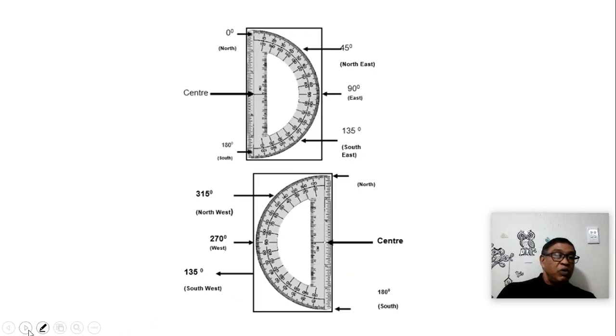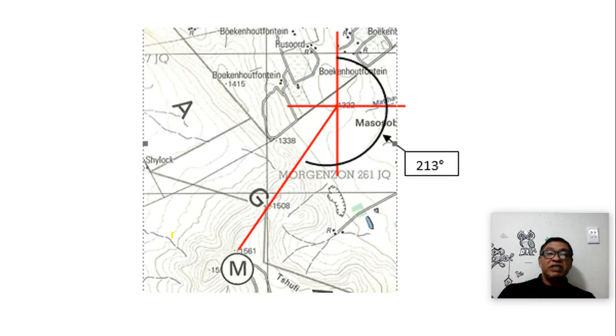These maps are exaggerated, so it's not the real scale. When I measured from here to there, I will put an answer of 213 degrees. That then is my true bearing.